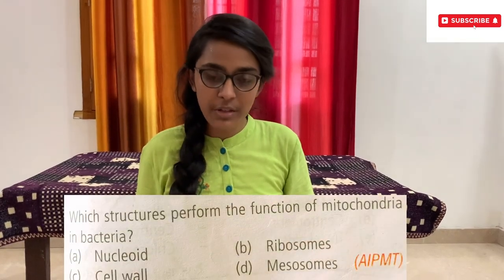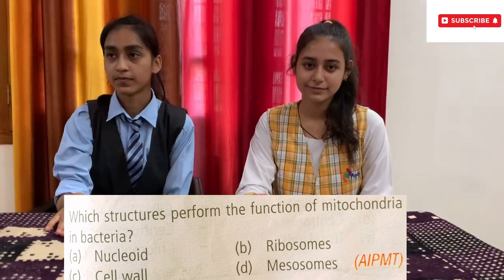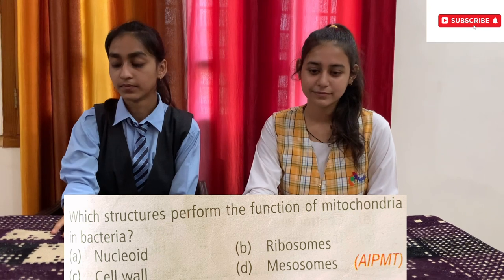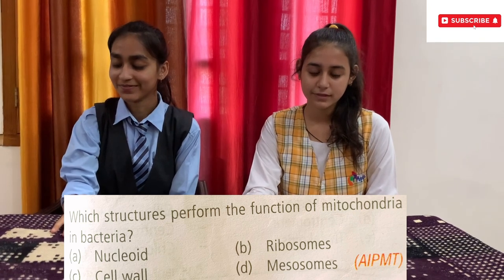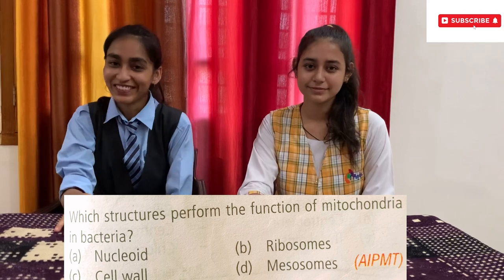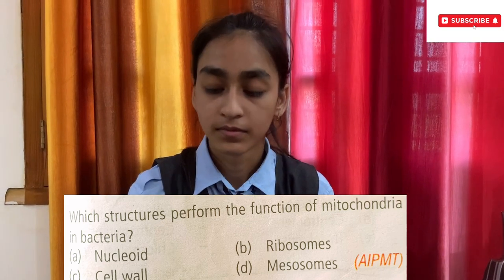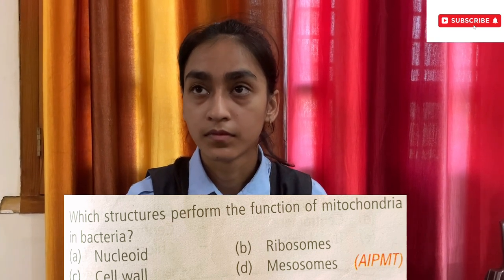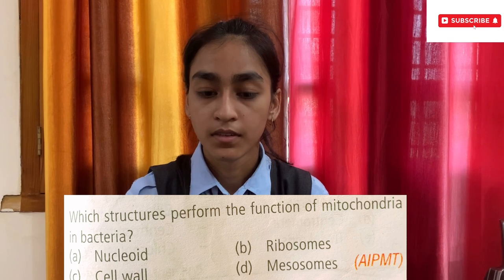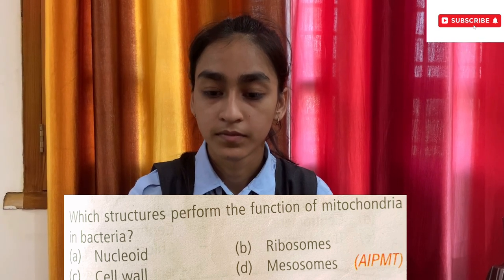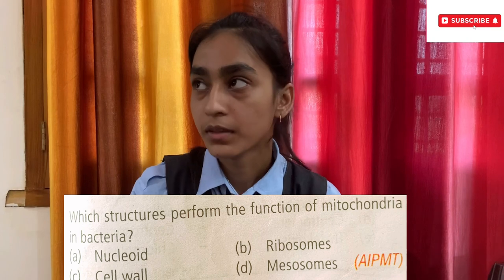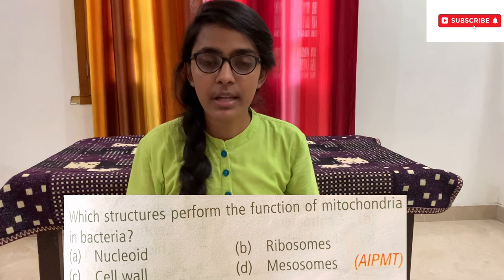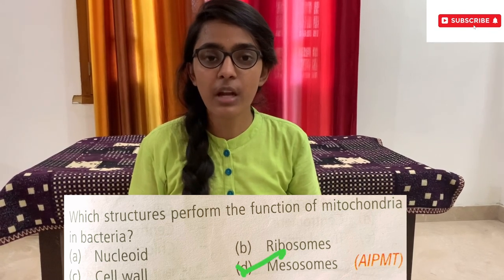Which structure performs the function of mitochondria in bacteria? Options: A) Nucleoid, B) Ribosomes, C) Cell wall, D) Mesosomes. Sejal taps first. Repeating the options: A) Nucleoid, B) Ribosomes, C) Cell wall, D) Mesosomes. Option D, Mesosomes, is the correct answer. Give her a huge round of applause!